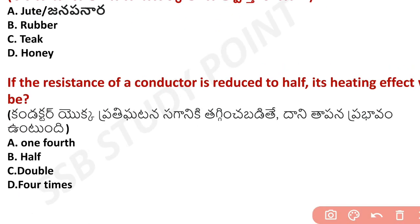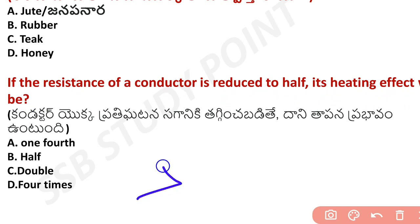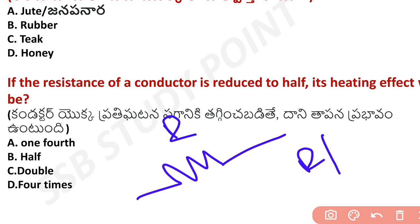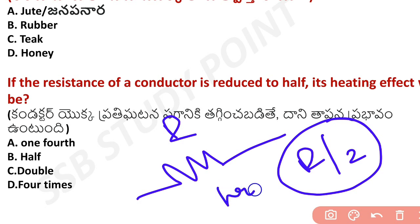Next question: if the resistance of a conductor is reduced to half, what will its heating effect be? When resistance is reduced to half, the current flow through the conductor changes accordingly.